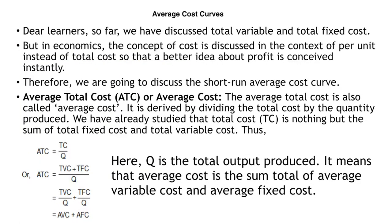Now let us discuss average cost curves. So far we have discussed total variable and total fixed cost. But in economics, the concept of cost is discussed in the context of per unit cost rather than total cost, so that a better idea about profit is obtained. Therefore, we are going to discuss the short run average cost curve. Average total cost (ATC), also called average cost, is derived by dividing the total cost by the quantity produced. Total cost is the sum of total fixed cost and total variable cost.